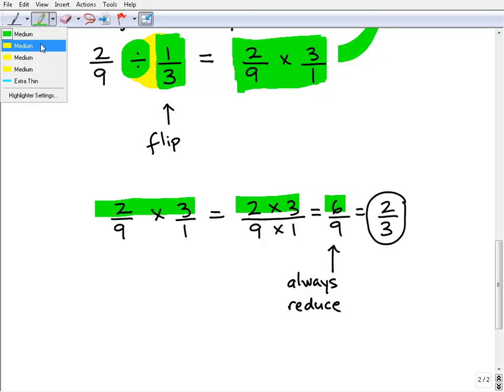And then we multiply the denominators: 9 times 1, which is 9. So we end up with the answer 6 over 9,